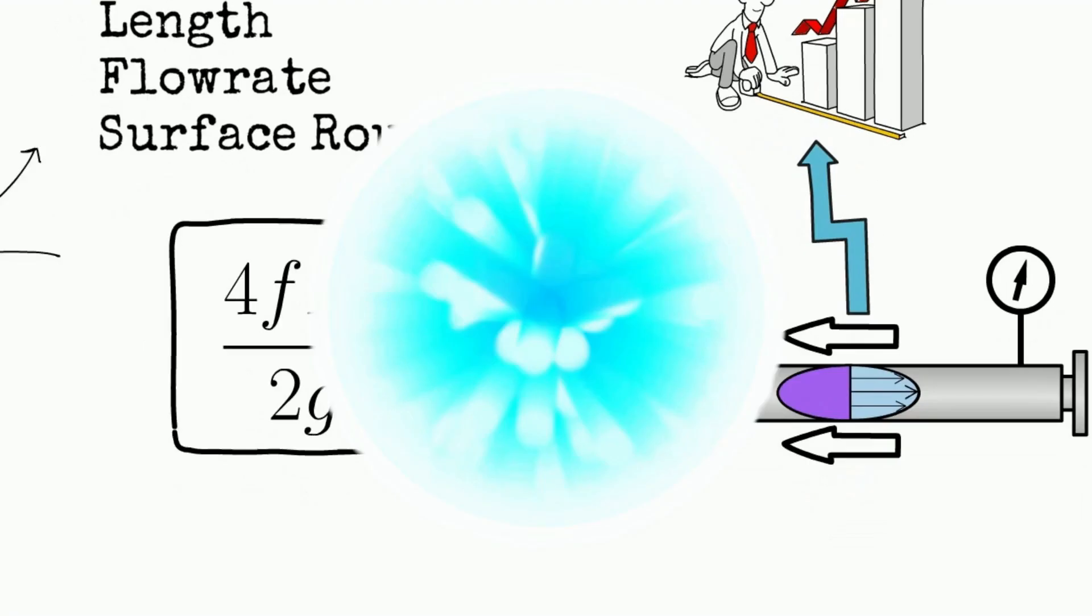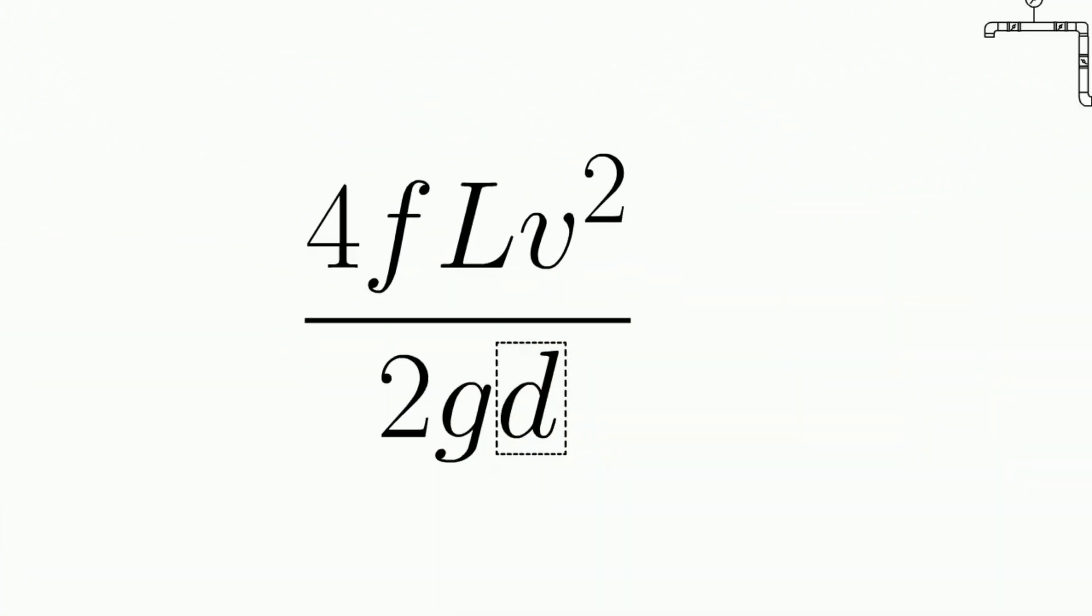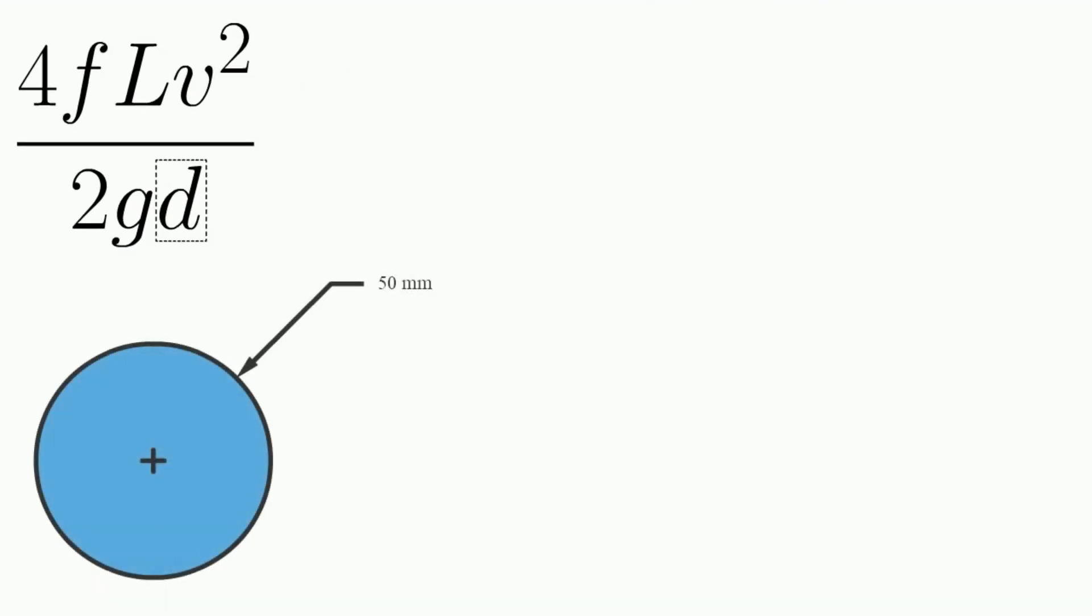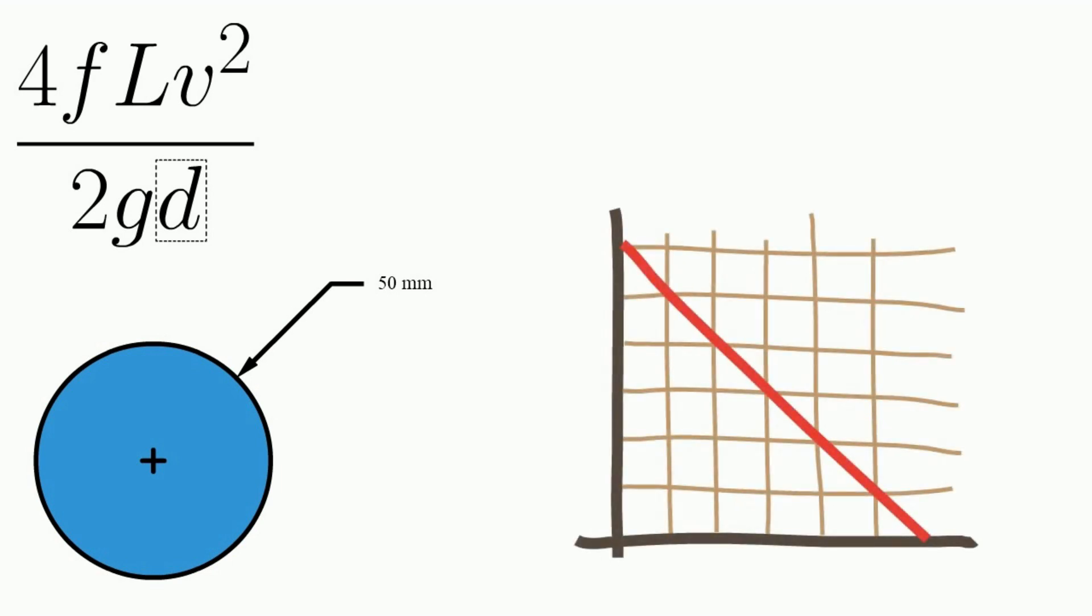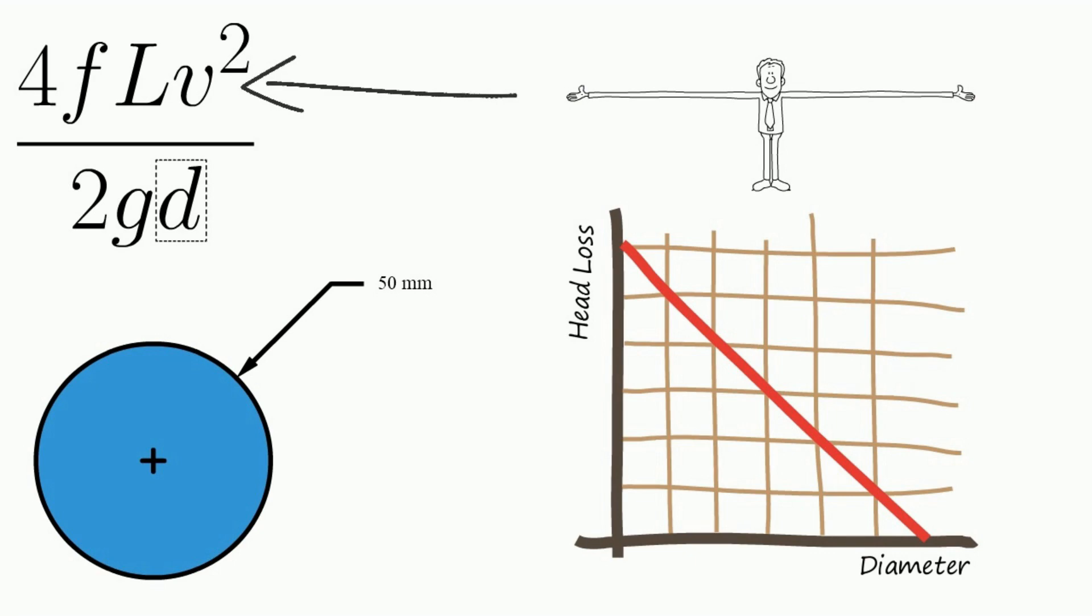Let's take a closer look at each of these factors. The diameter of the pipe is one of the most important factors when it comes to head loss. Generally speaking, larger diameters will have less frictional head loss than smaller diameters. This is because the larger diameter provides more space for the fluid to flow, reducing the velocity of the fluid and thus the amount of pressure drop.